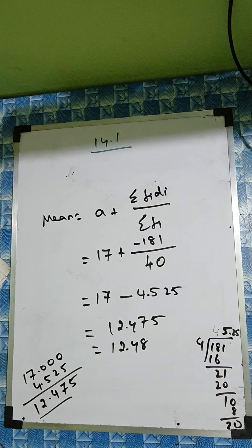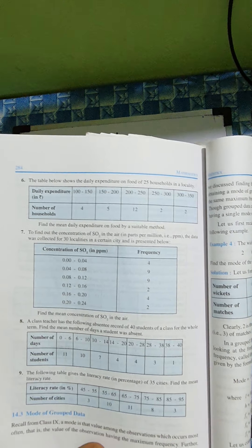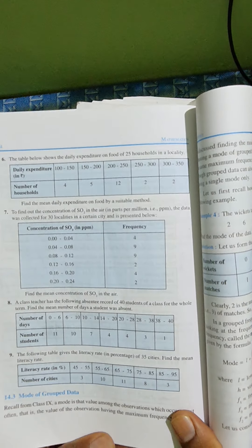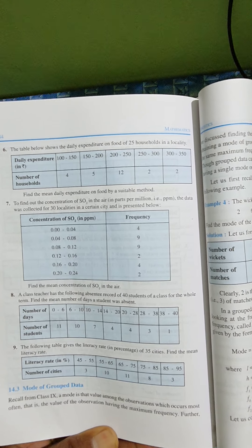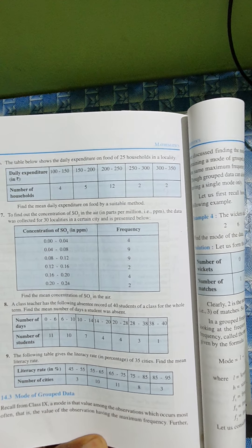Now go to question number 9. The following table gives the literacy rate in percentage of 35 cities. Find the mean literacy rate.